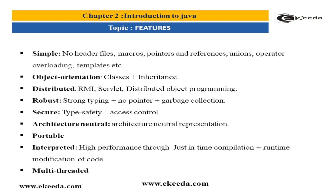Java is also an interpreted language. The JVM provides a Java interpreter which takes your bytecode and gives you machine-specific code. Now, interpreters are a bit slower, so Java has also provided the JIT compiler — Just In Time compiler — which makes performance much faster. High performance is achieved through the JIT compiler plus runtime modification of code.